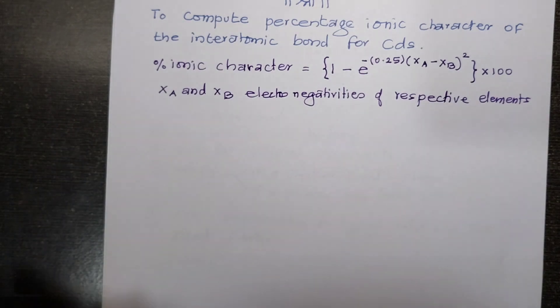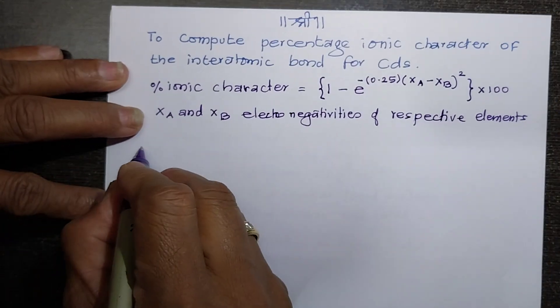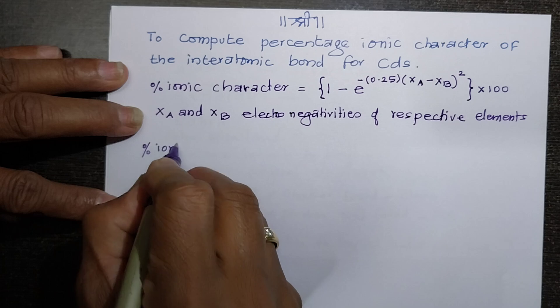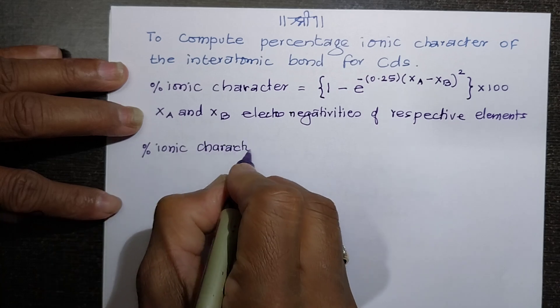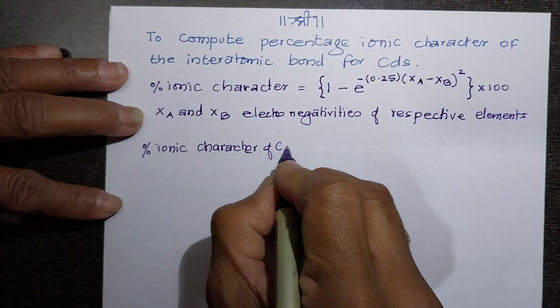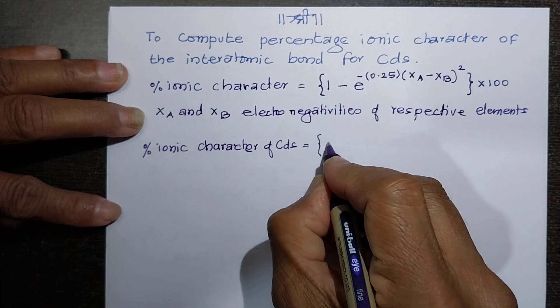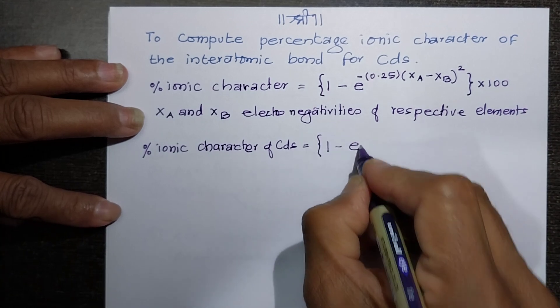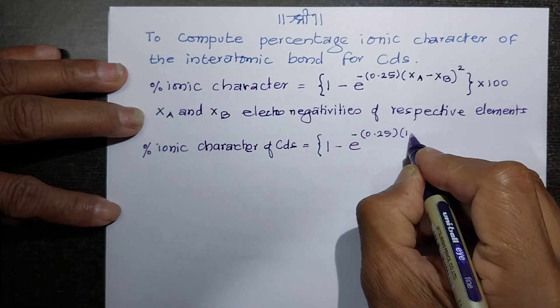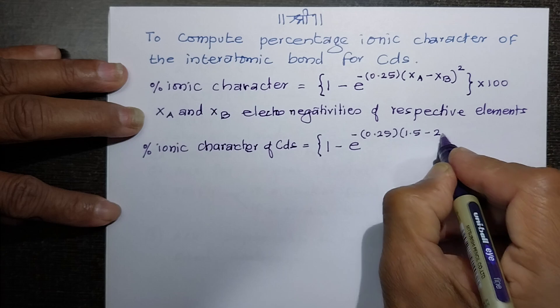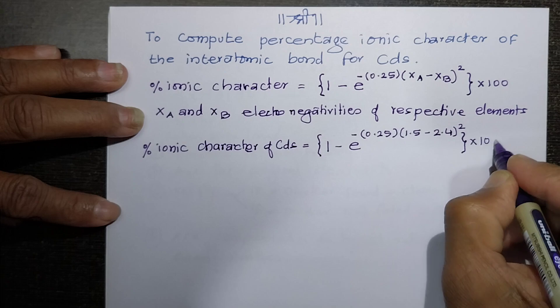When we substitute this value we will have the percentage ionic character of CdS as 1 minus e raise to minus 0.25 remains as it is. Then, this is 1.5 minus 2.4 bracket squared and then this will be required to be multiplied by 100.